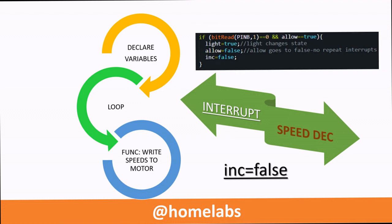If the interrupt is triggered on pin 9, then INC is set to false, telling the Arduino looping through the code to reduce the speed by 5 units.